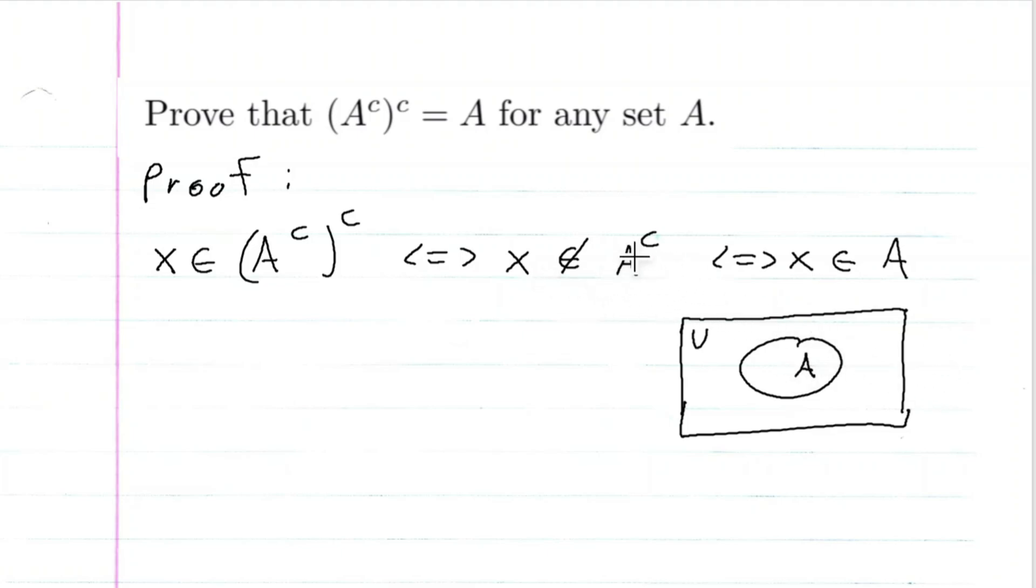So if X is not an element of A complement, remember this is A, so everything outside is A complement. Everything outside of A in the universal set is A complement. So if X is not in A complement, that means X must be in A.